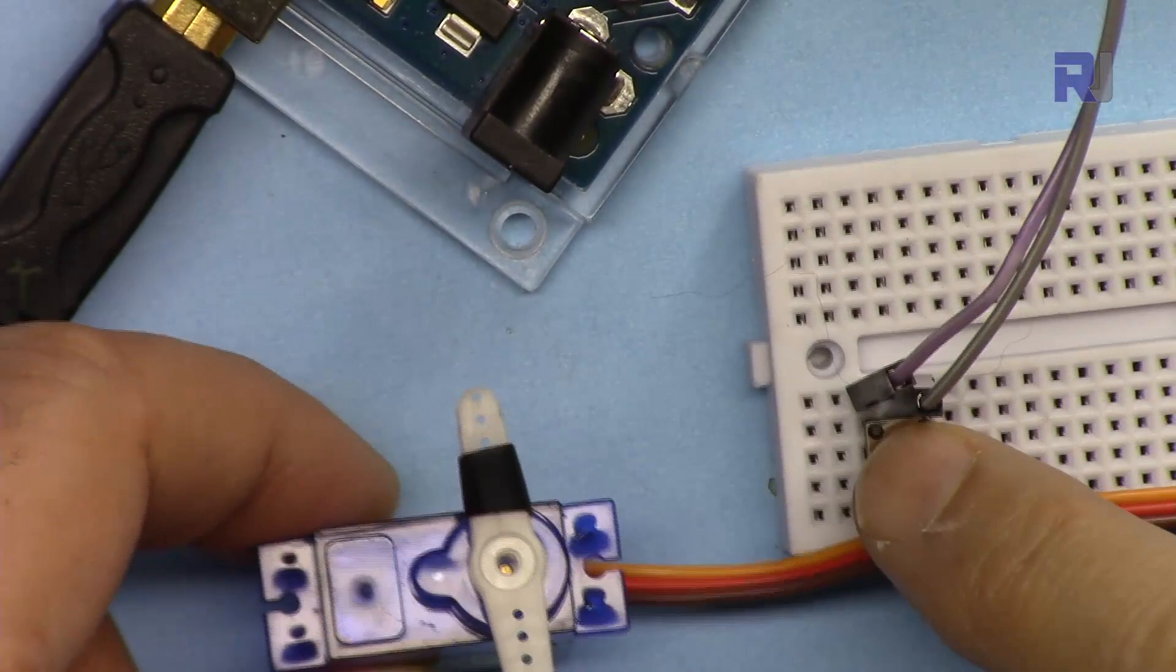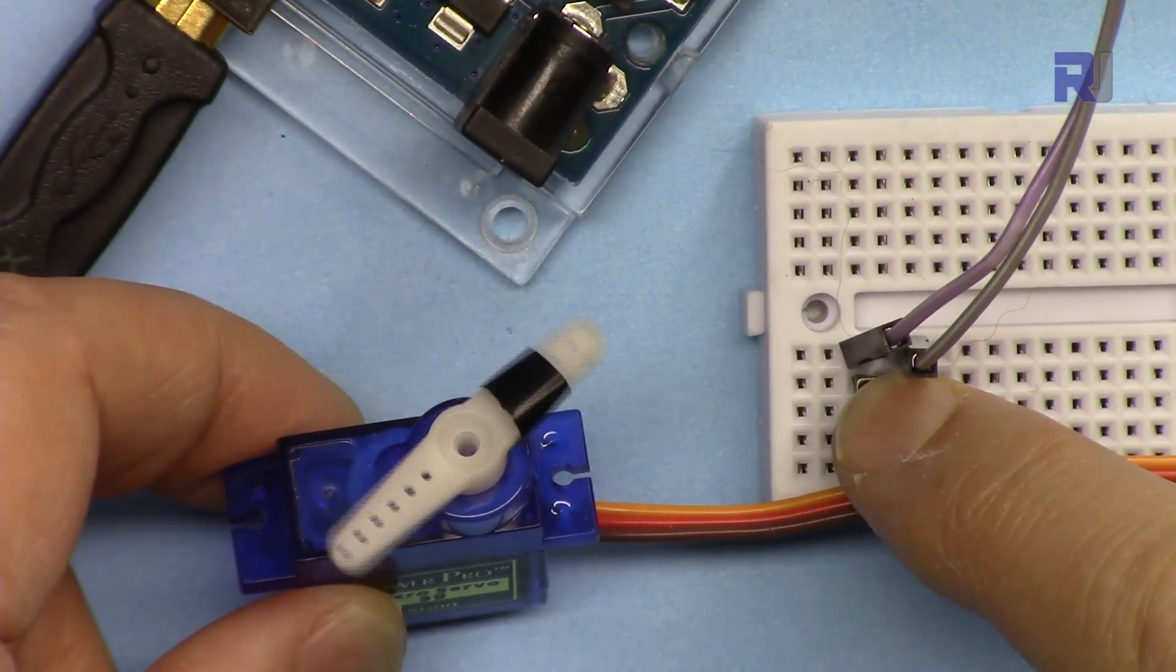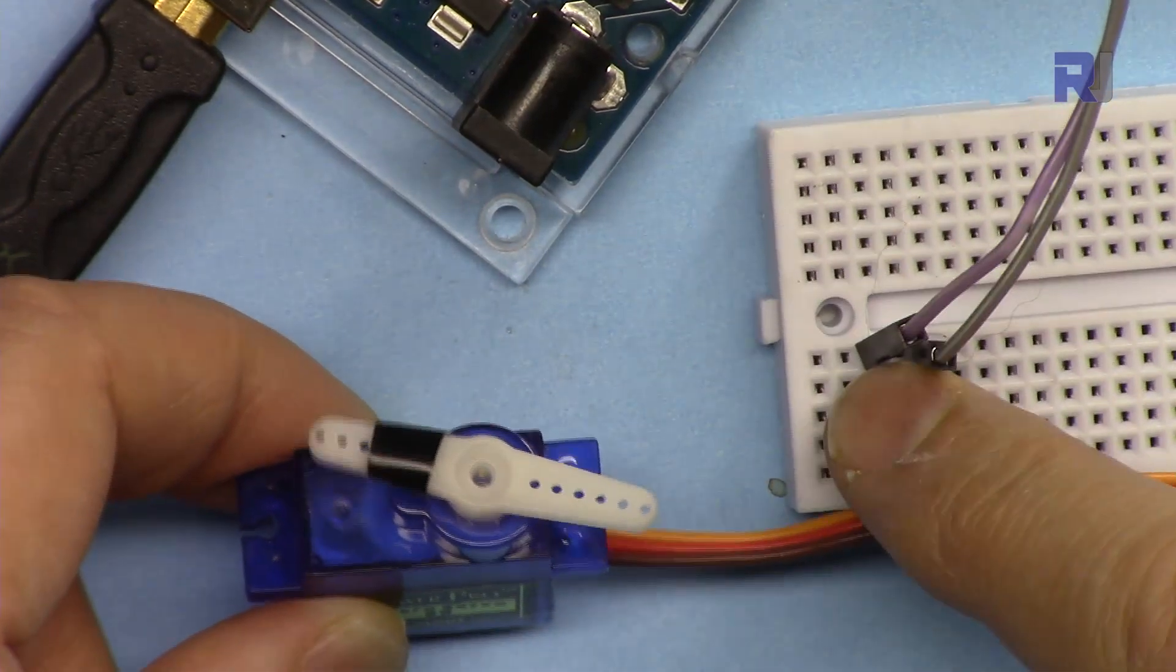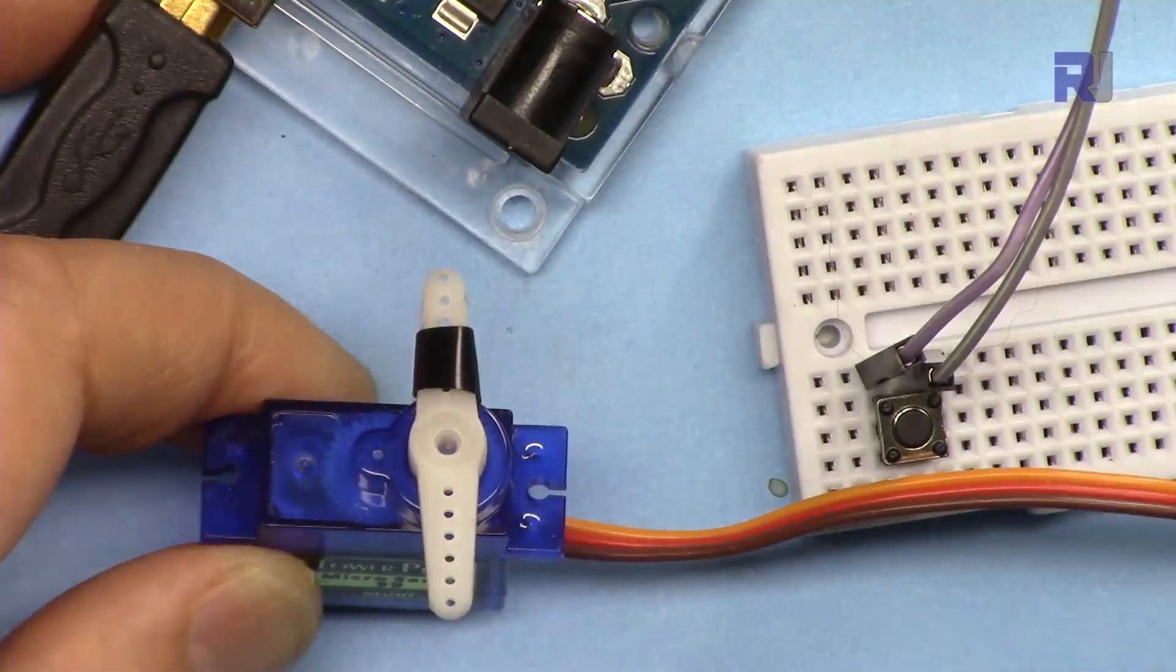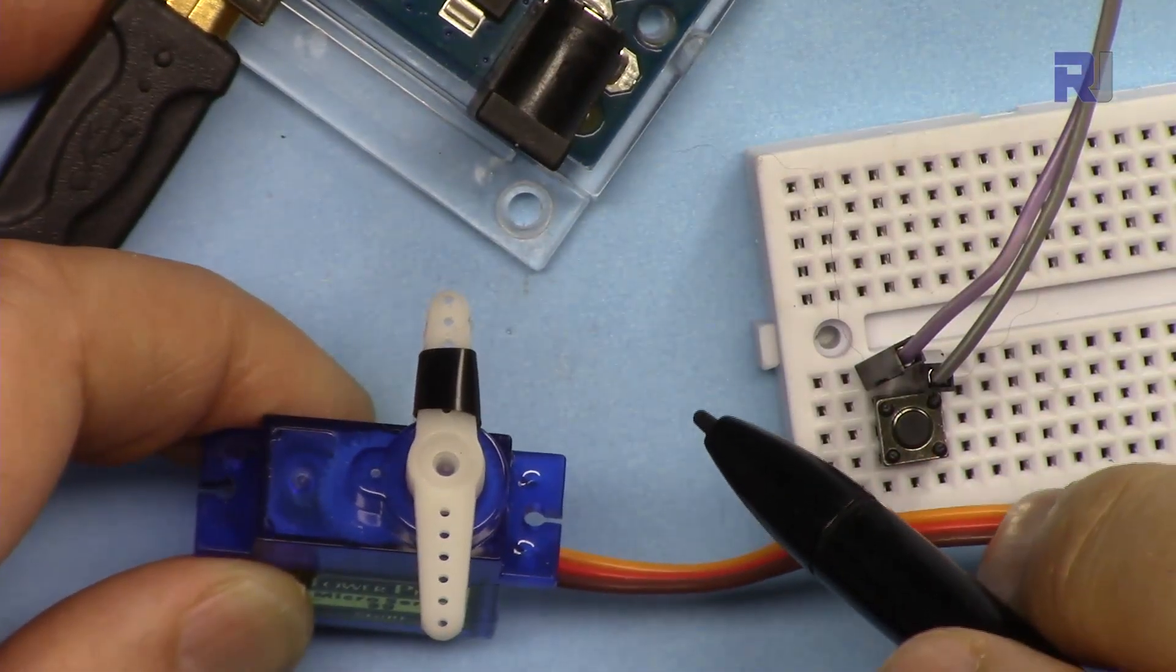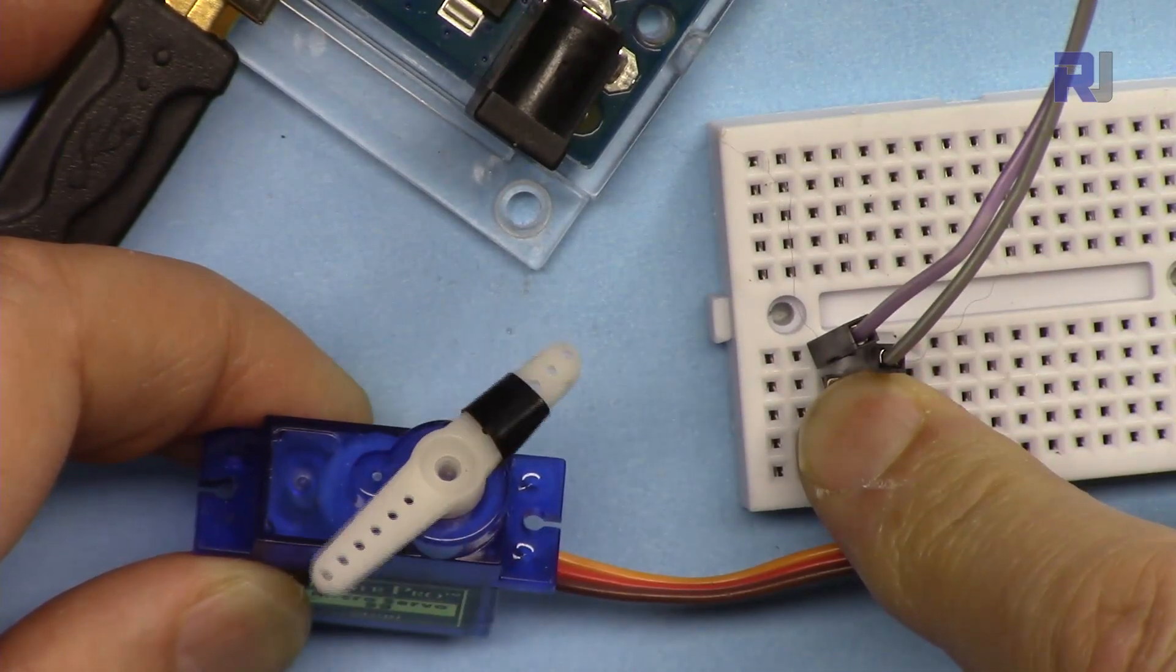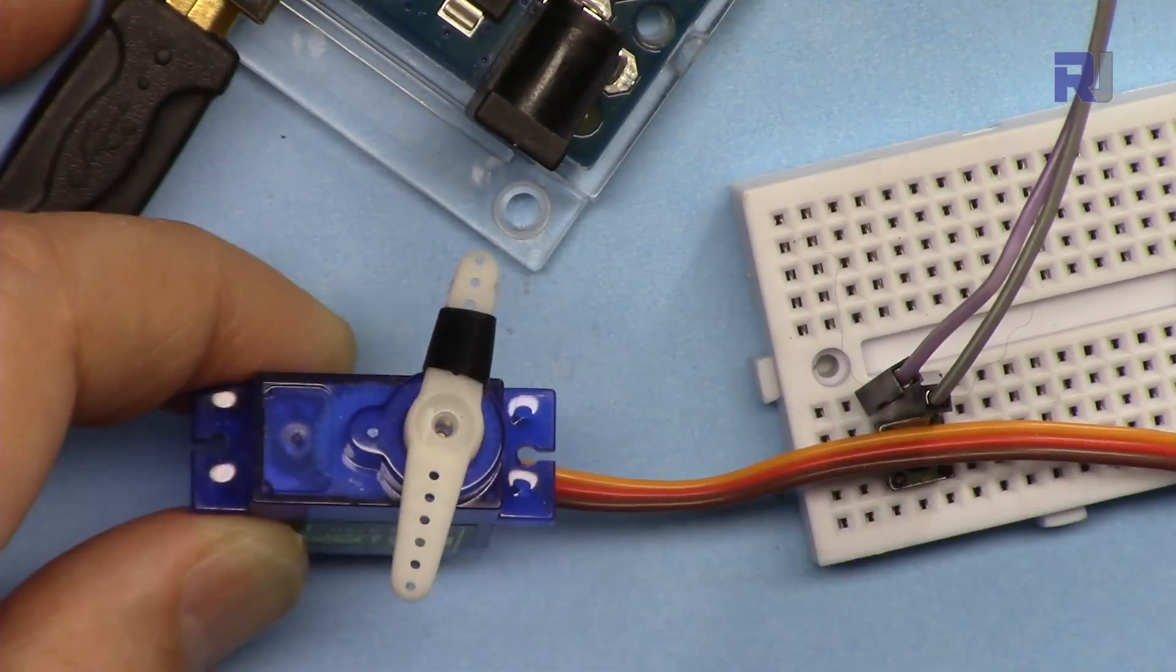When you push this push button and keep pressing, it goes between 0 and 180 degrees. When you release it at any moment it will just stop. You can set it between any angle, for example between 10 and 150. Now if I keep it pressed it goes between 10 and 150, so you can set your boundary.